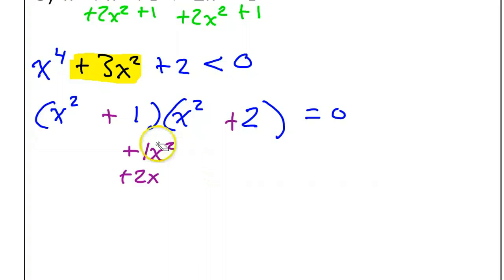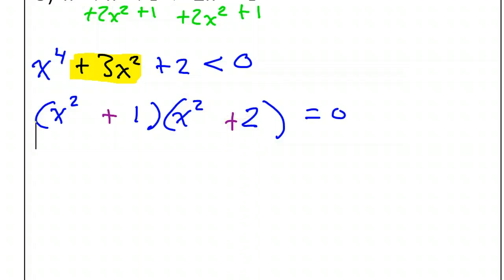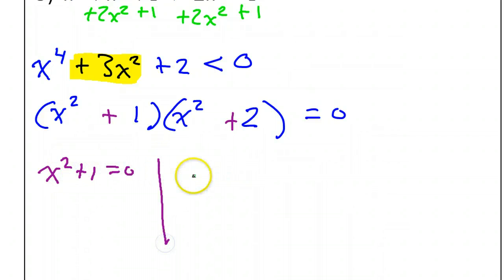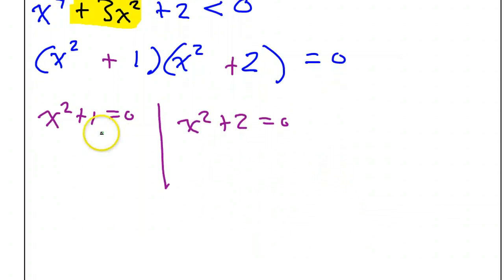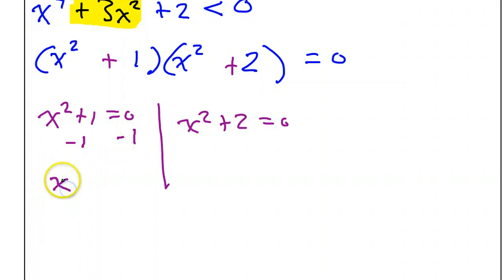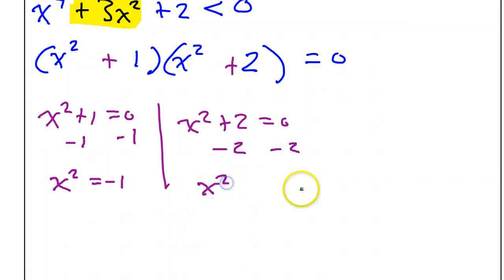Let's go ahead and set these factors equal to 0. That gives us x squared plus 1 equals 0 and x squared plus 2 equals 0. Subtracting 1 from both sides gives x squared equals negative 1, and subtracting 2 from both sides gives x squared equals negative 2.